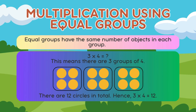Multiplication using equal groups. Equal groups have the same number of objects in each group. 3 times 4 equals... This means there are 3 groups of 4. There are 4 circles in each group. There are 12 circles in total. Hence, 3 times 4 equals 12.